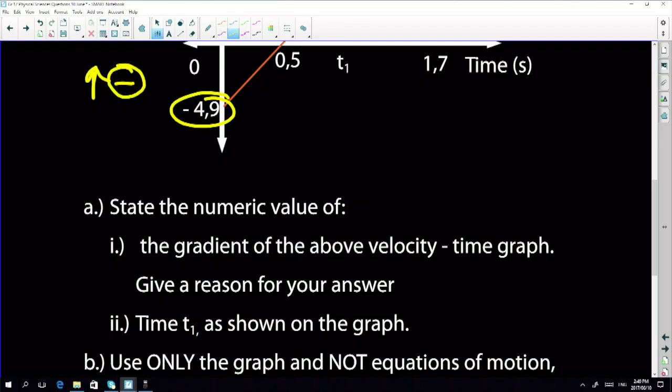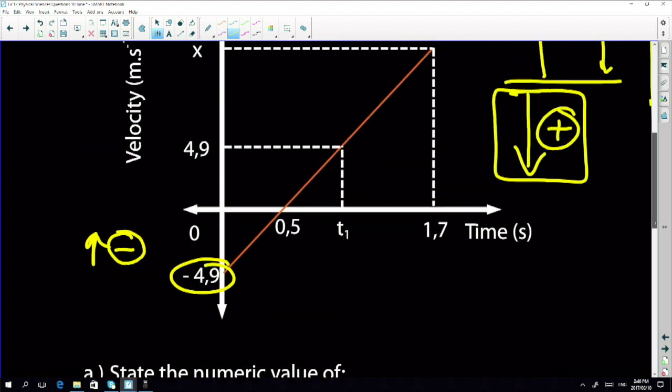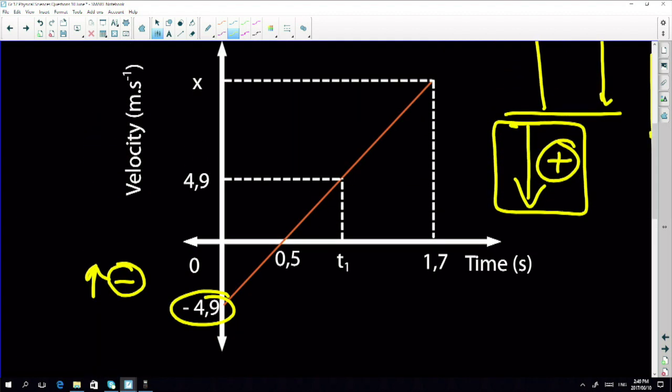First question: state the numeric value of the gradient of the graph. What does the gradient of a velocity-time graph give us? You need to know this. Gradient always gives us acceleration. Now this is vertical projectile motion.